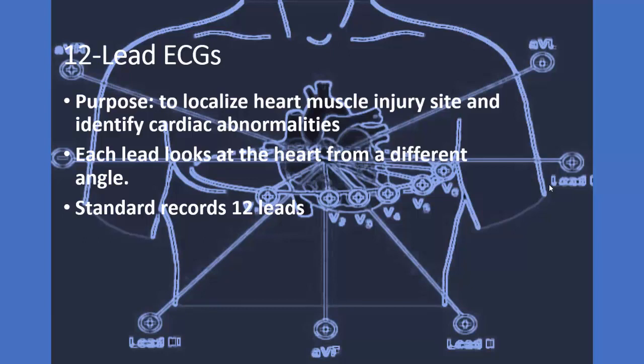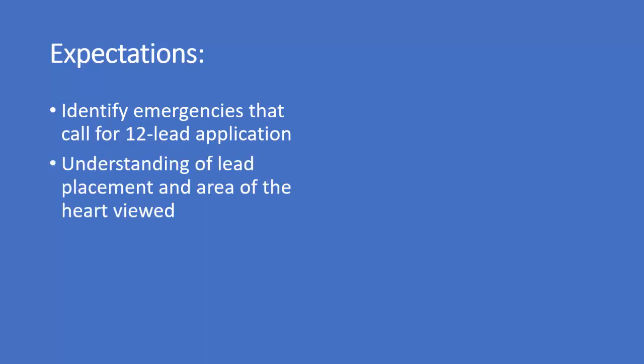The expectations for you as the student once you are done with this lecture: identifying emergencies that call for 12 lead application. The standard is certainly going to be anytime a patient has chest pain. One caveat to remember is that all chest pain is considered cardiac chest pain until proven otherwise. Also put in your pocket the fact that you don't always have to have a STEMI for it to actually be ACS or muscle injury. Understanding of lead placement in the area of the heart viewed—one of the ways that I like to look at a 12 lead EKG is essentially a roadmap to the left ventricle, and each one of the leads will give us an idea of that particular geographical location, because it helps you identify that we are looking at areas of the heart.